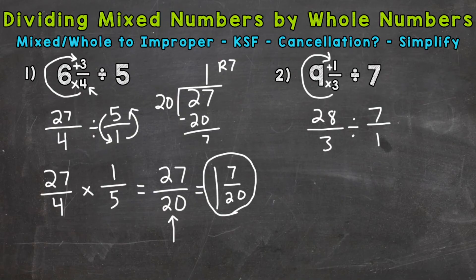Keep, switch, flip. Always keep your first fraction. Switch to multiplication and then flip your second fraction. So 1 7th now.